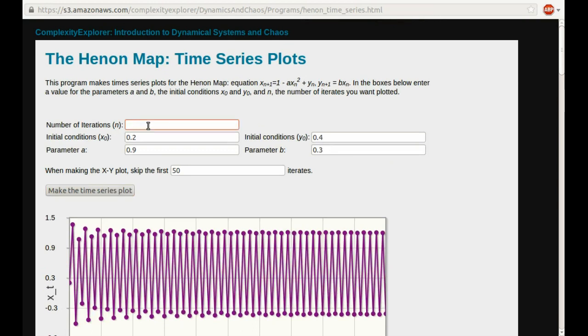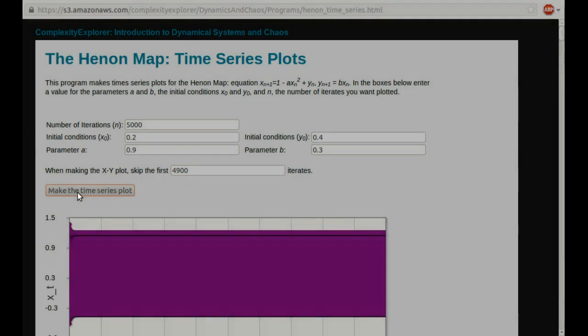So let's see here. I'm going to now have it do 5,000 iterates, and I'm going to have it skip plotting the first 4,900. So the purple plots, the time series plots, always are going to show all of the iterates. So let's get this started. So we expect that to be a big purple blob. We've seen those blobs before. It's taking a little while. There it is.